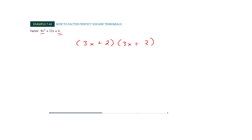That's all there is to it. Now there's one thing you have to be careful of. When you foil this back out, you get a 6x here and a 6x there, which combine to make the 12x. You're supposed to double-check because it's possible that even though we had the square roots on the front and the back, they wouldn't make the middle. So basically what you're checking is that you wind up getting that double middle term: 6x plus 6x gets you the 12x.